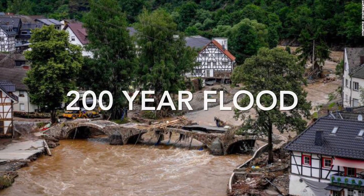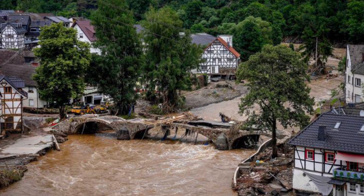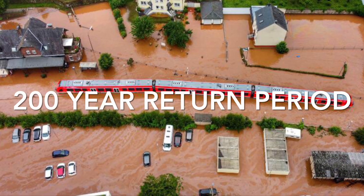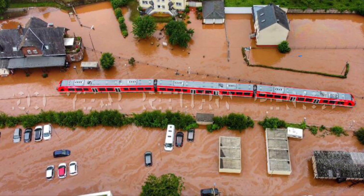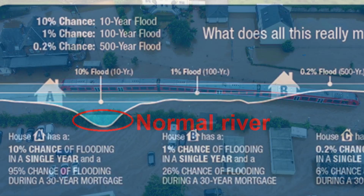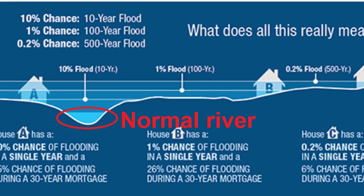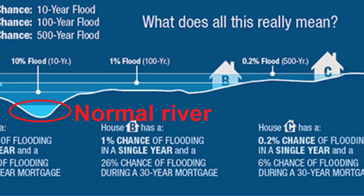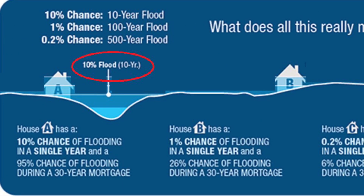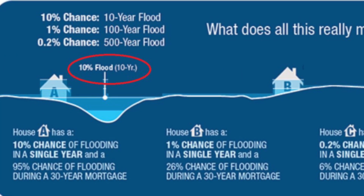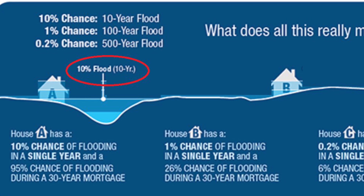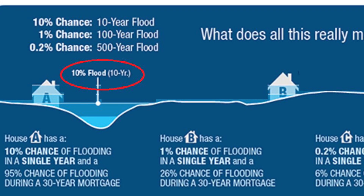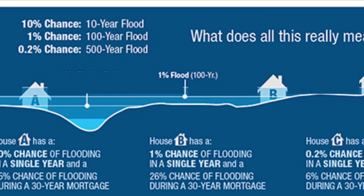First we need to understand the term '200-year flood,' or the flood with a return period of 200 years. In this illustration we see a river running under normal conditions. Every 10 years the river is flooded and house A is flooded a little, while house B and C are safe.